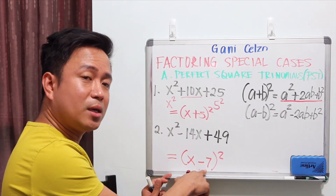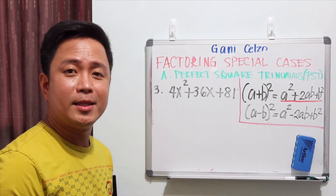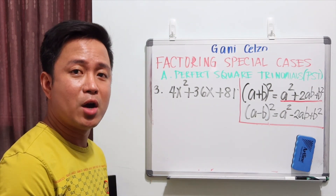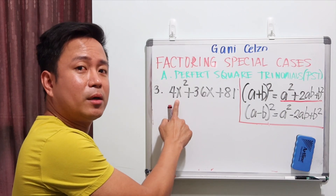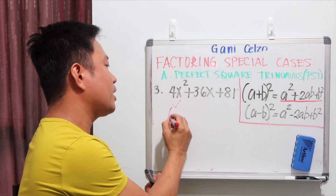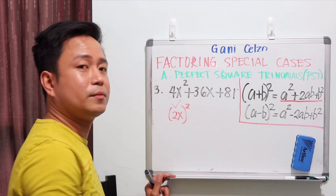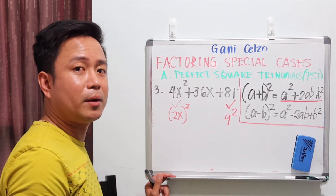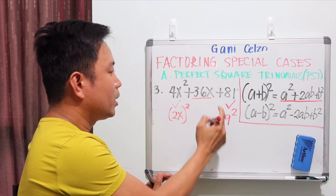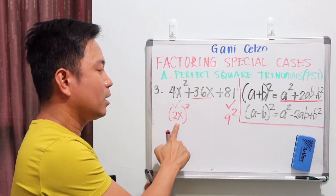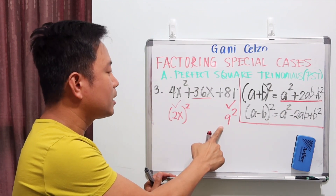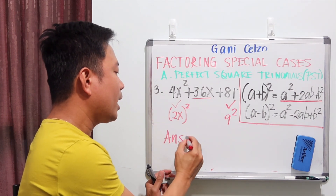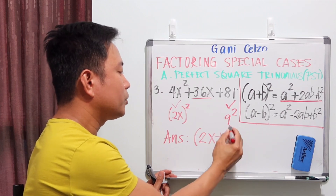It's minus 7 because we need negative 14x as the middle term. Now let's see if the third example is a perfect square trinomial using those three conditions. Is 4x² a perfect square? Yes, because 4x² is the same as 2x times itself. Third term 81 is also a perfect square because 9² = 81. Is the second term twice the product of a and b? 2x times 9 is 18x; doubled is 36x. Therefore it is a PST: (2x + 9)².